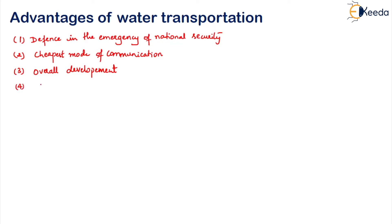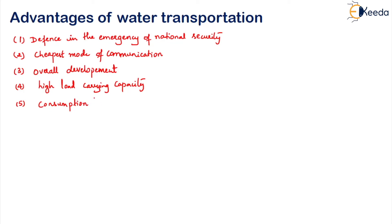The fourth advantage is that it possesses high load carrying capacity — very huge loads of goods can be transported from one place to another. The fifth advantage is that it encourages consumption of foreign goods and also encourages us to provide our goods to foreign countries. People in different countries consume foreign goods like medicines and machinery because of this means of transportation.